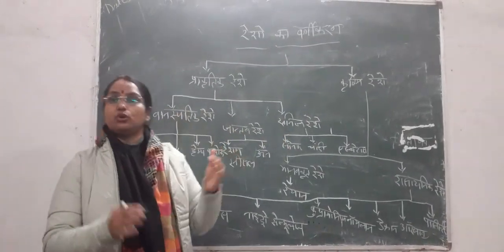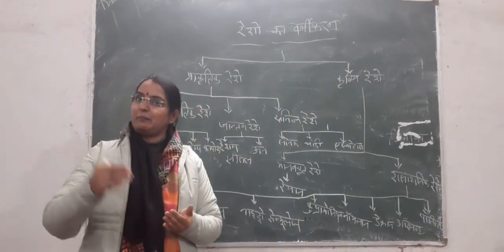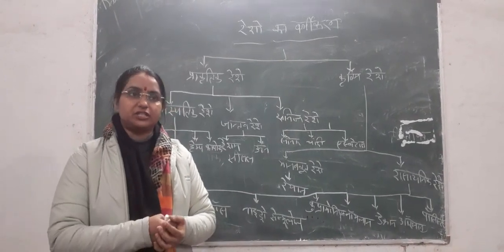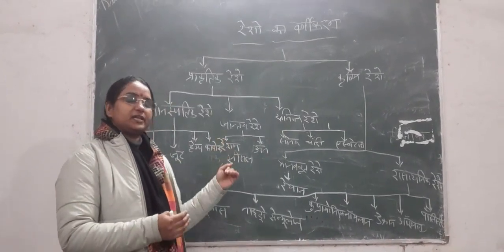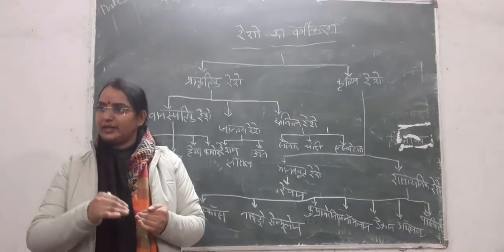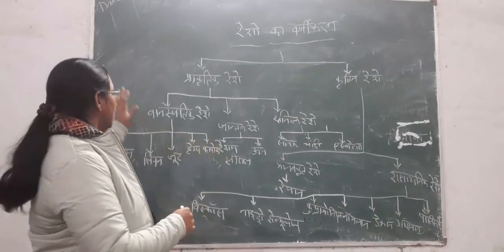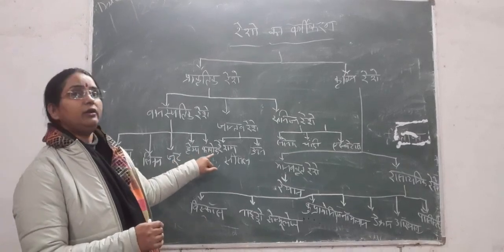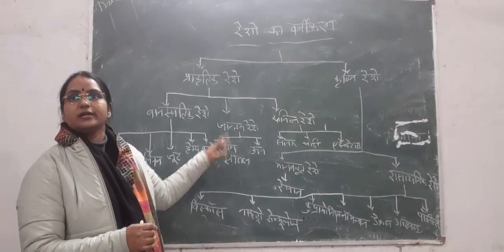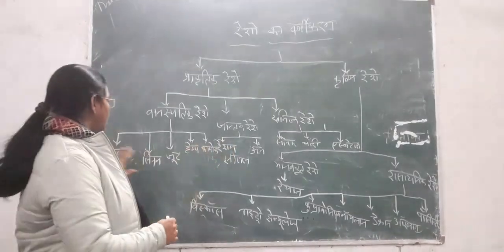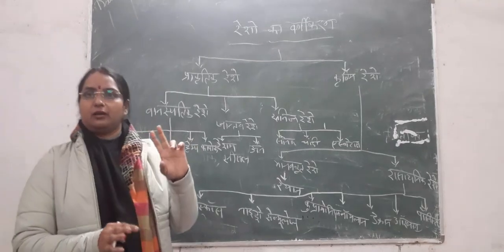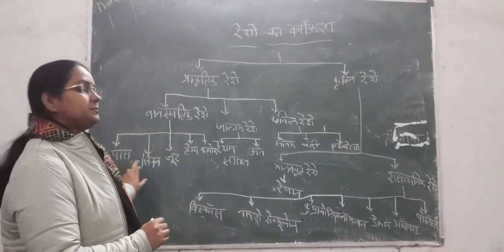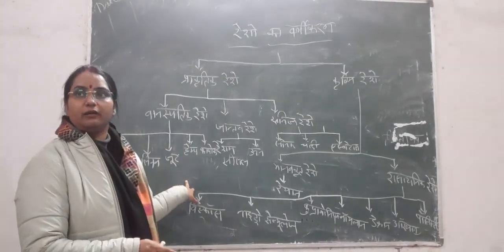Balasatik Rishi is the one that we get from plants. We will keep them in Balasatik Rishi. So you will find Kapaas, Linen, Jute, and Kapok, Cecil. Basically, you have two things in BA second semester: Kapaas and Linen.